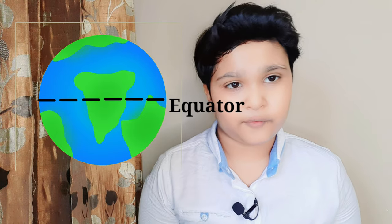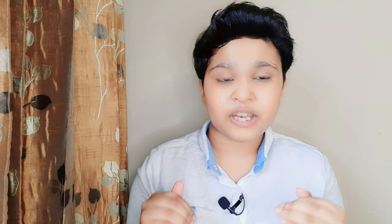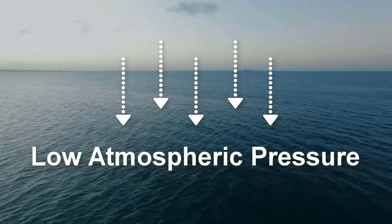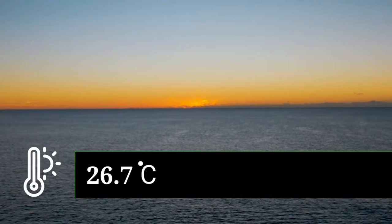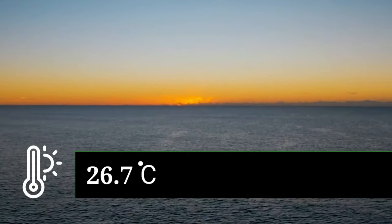Let's look at the Earth. We can easily find its center, which in scientific terms we call the equator. In this region the heat of the sun is the most. Now, when there is low atmospheric pressure over a large area of a water body, especially near the equator, and the temperature of the water is more than 26.7 degrees Celsius, cyclones are formed.